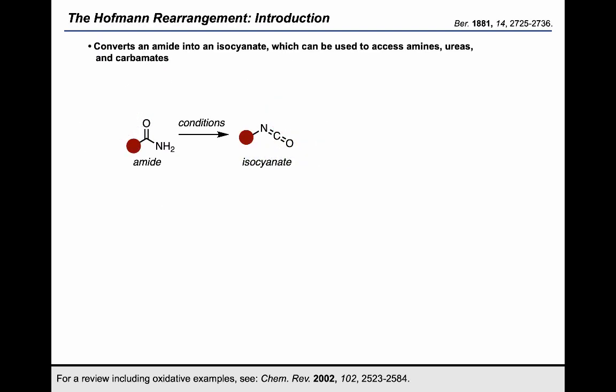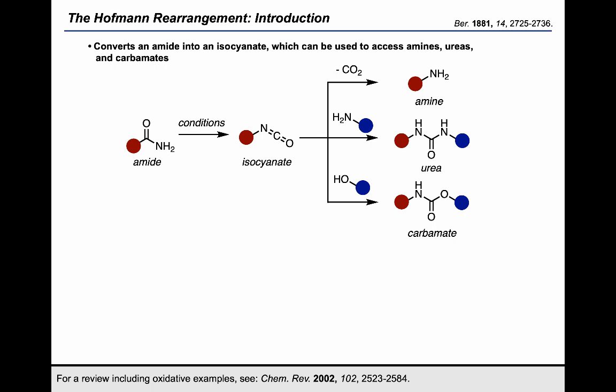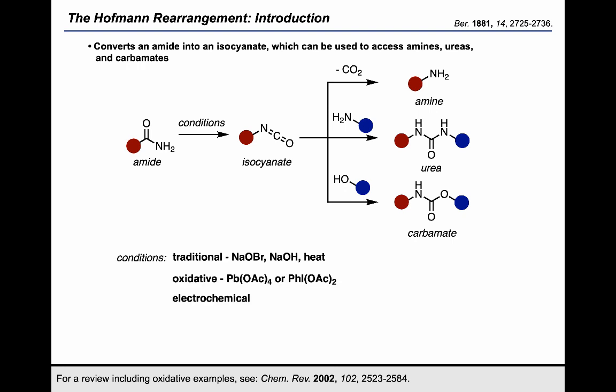The Hoffman rearrangement is very useful for converting amides into isocyanates. Through a number of different conditions, the isocyanate can then be converted either into a deprotected amine, a urea, or a carbamate. The types of conditions available traditionally include sodium hypobromite or hypochlorite with strong base in the presence of heat. There are also oxidative conditions available as well as electrochemical conditions.